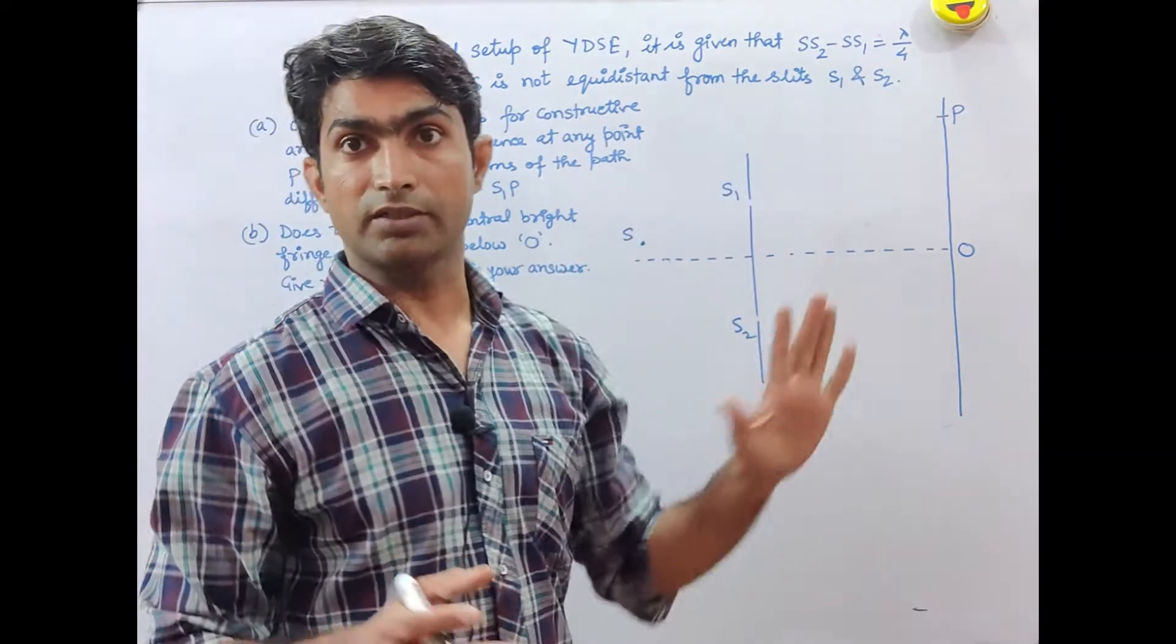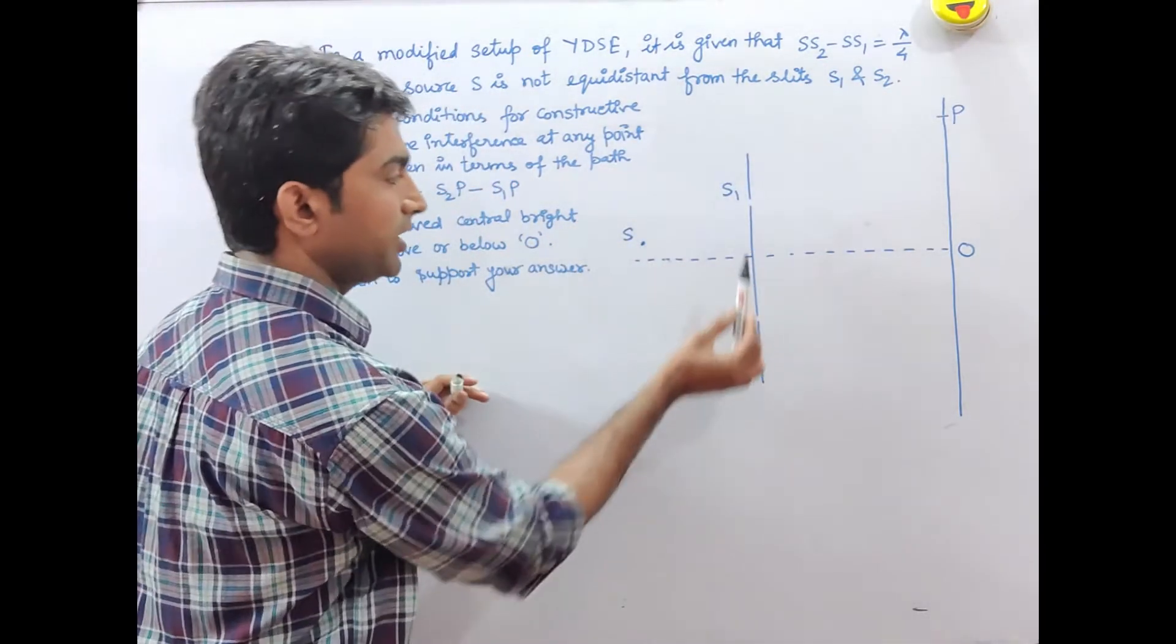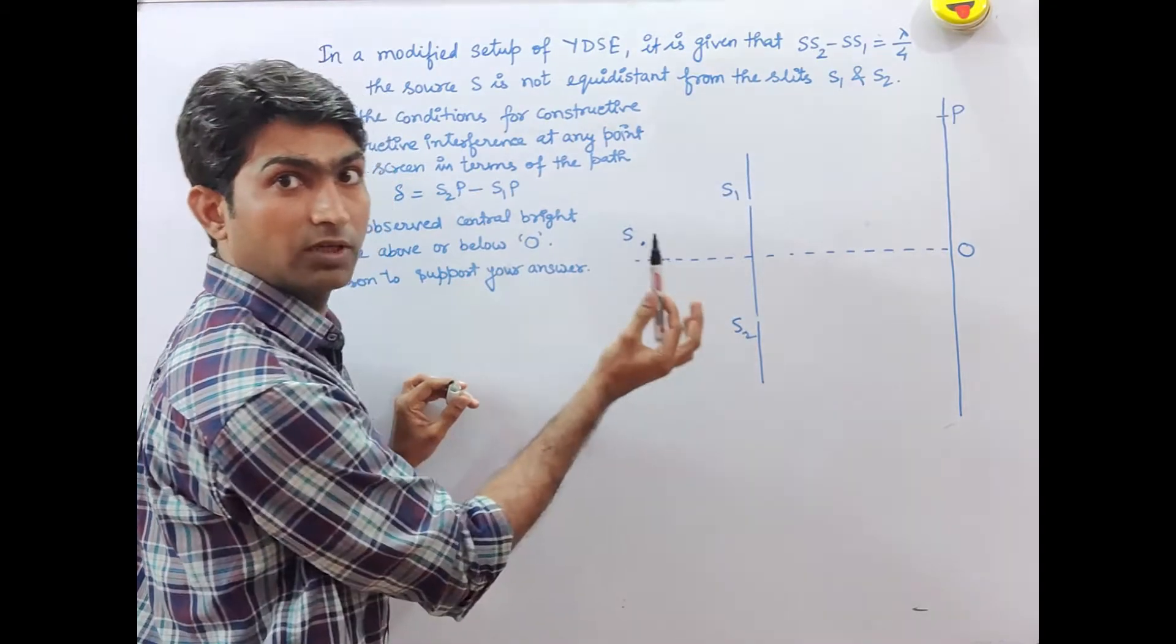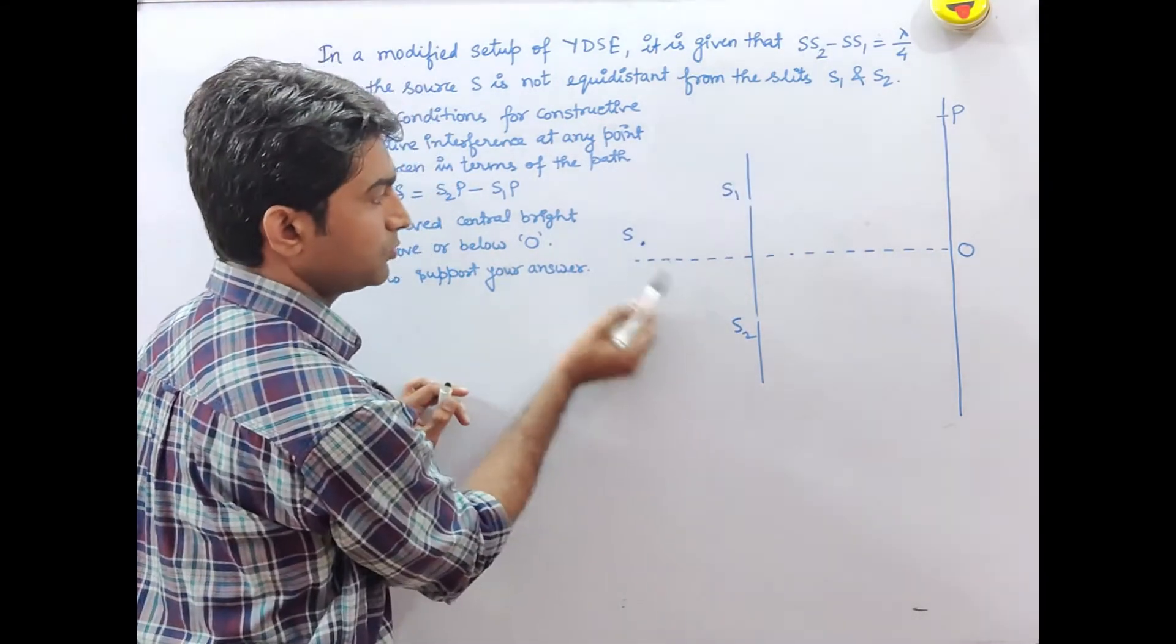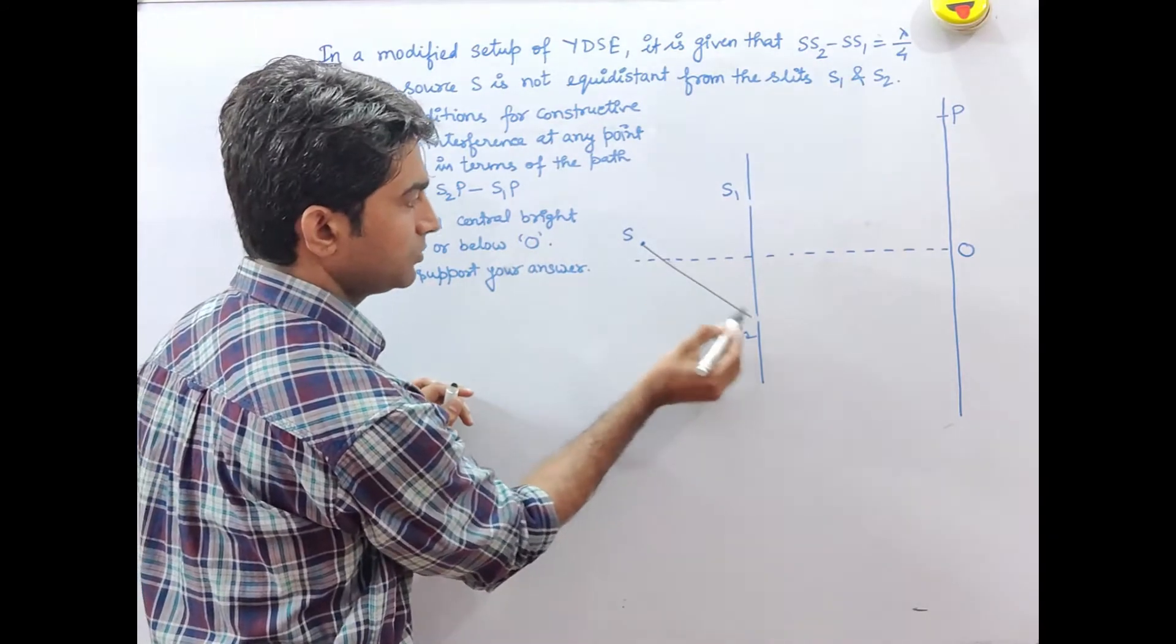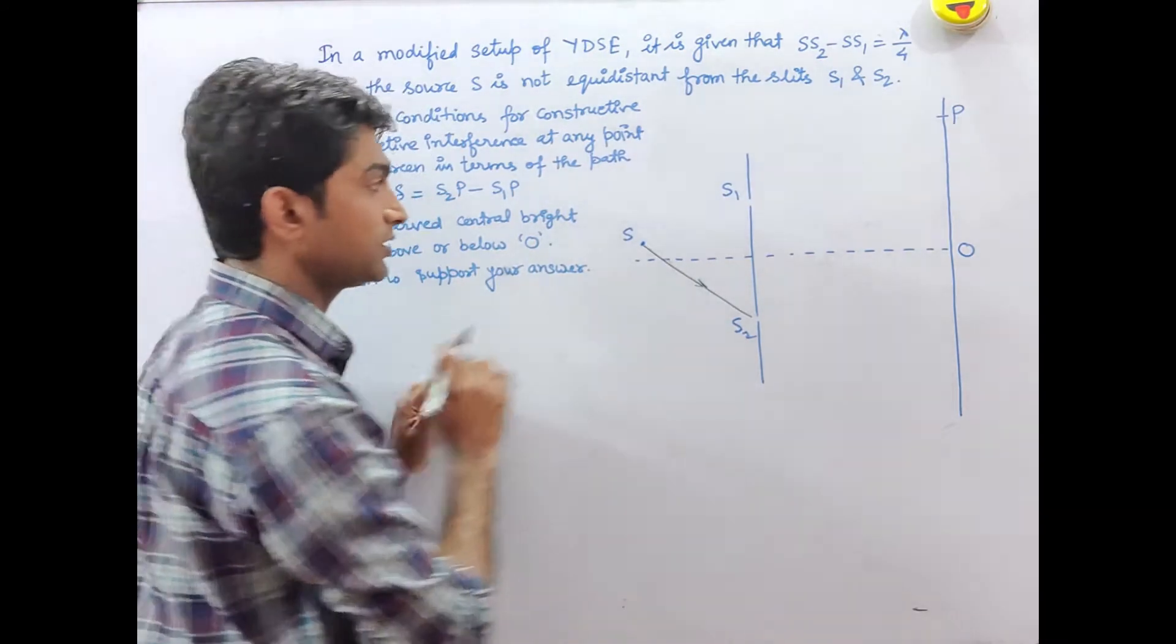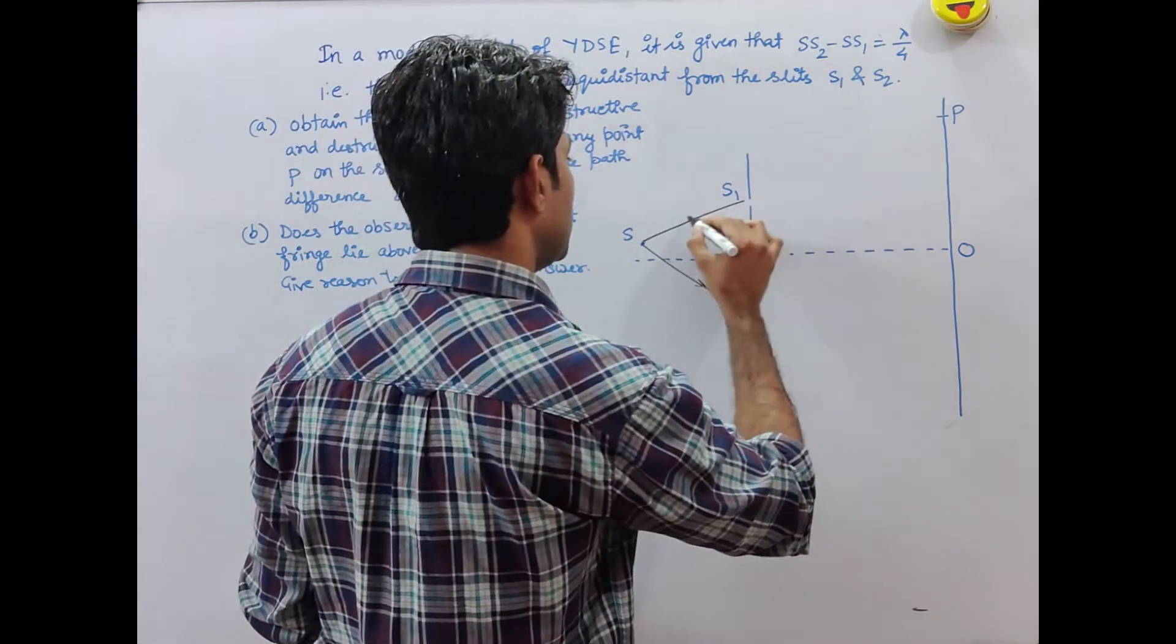The source at S has SS2 greater than SS1, so the light wave will travel extra distance compared to the distance SS1.